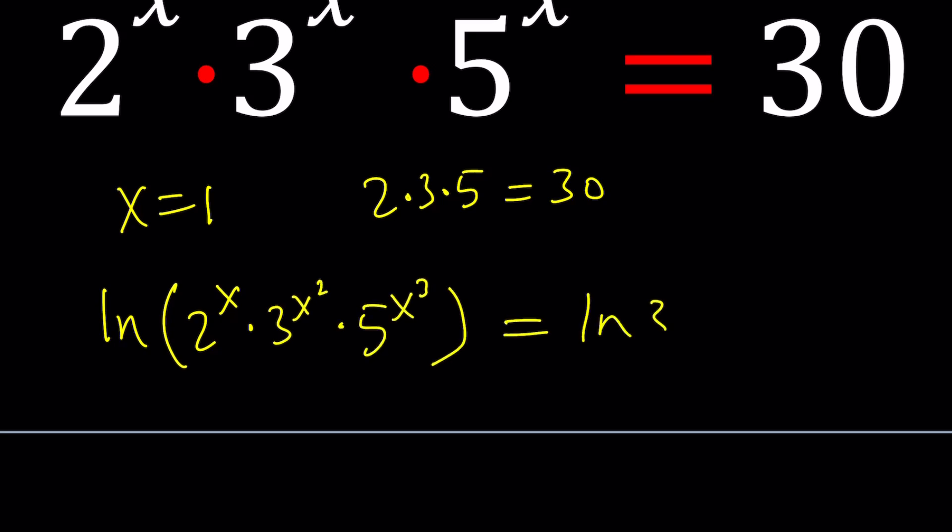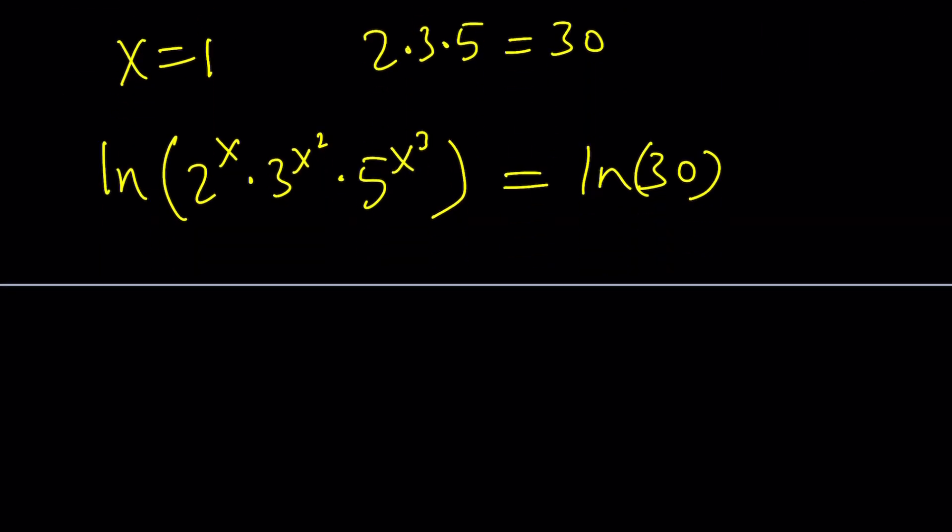Now, what happens if you ln a product? You get a sum of ln. So it's going to be ln 2 to the x plus ln 3 to the x squared plus ln 5 to the x cubed equals ln 30. I can go ahead and split up ln 30 into pieces, but let's not do that right now. We're going to do it later anyways.